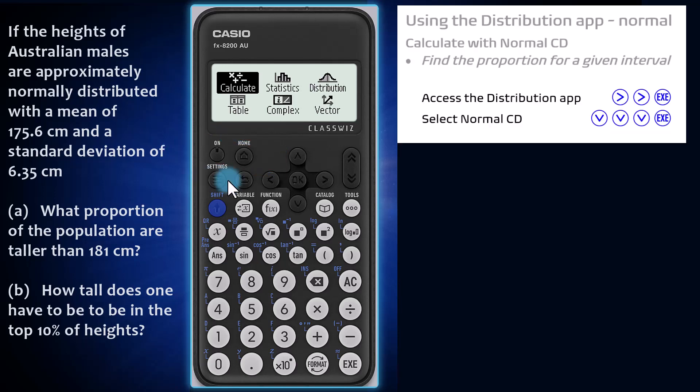From the home screen, arrow across twice and choose the distribution app by pressing execute. For this calculation, arrow down and choose the normal cumulative distribution, or normal CD for short.